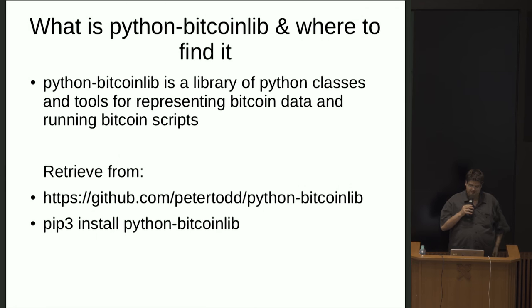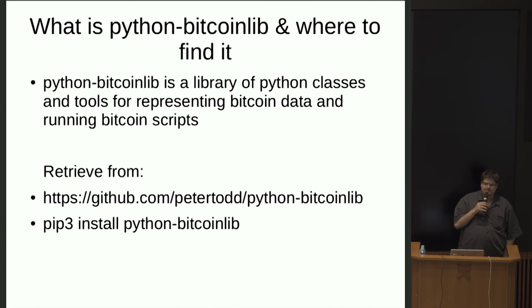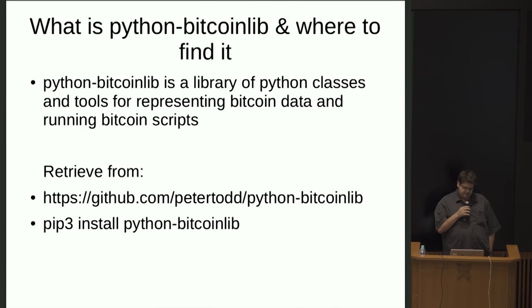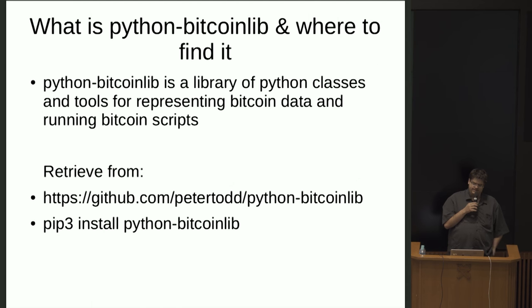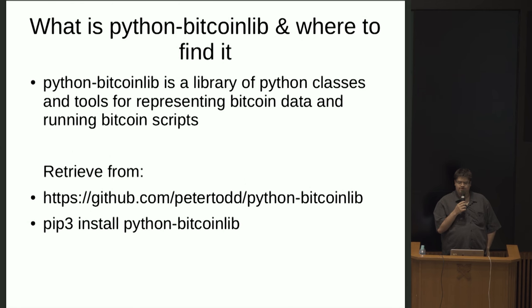Python Bitcoin Lib is a library of Python classes, functions, and other little helper methods for representing, parsing, and serializing Bitcoin data, running and evaluating Bitcoin scripts. It's a Python library — very useful for application development, for testing, things like that.